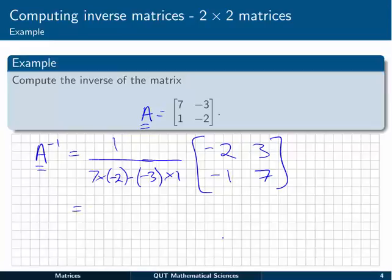Then we just sort of simplify this all through, push through the values here. We've got minus 14 plus 3 is going to be minus 11. So 1 on minus 11, minus 2, 3, minus 1, 7.